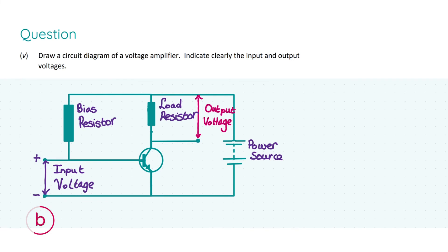In part four we looked at an NPN bipolar transistor. Part five asks us to draw a circuit diagram of a voltage amplifier, indicating clearly both the input and output voltages. A voltage amplifier is a circuit in which a small change in the voltage across its input causes a correspondingly larger change in the voltage across its output.